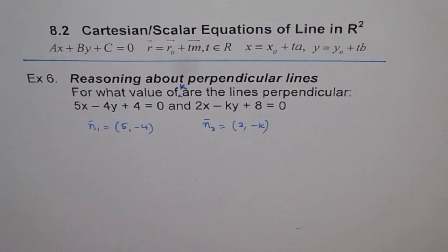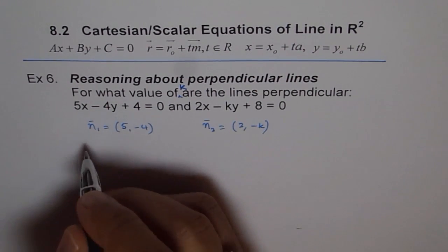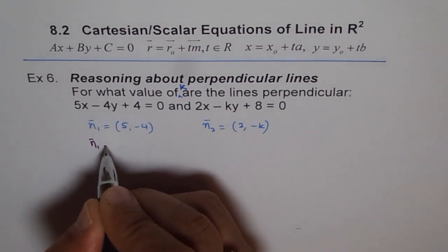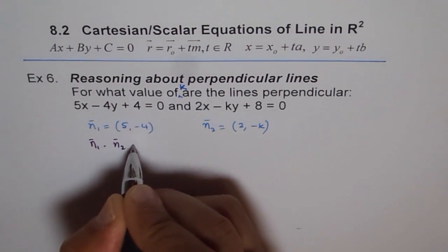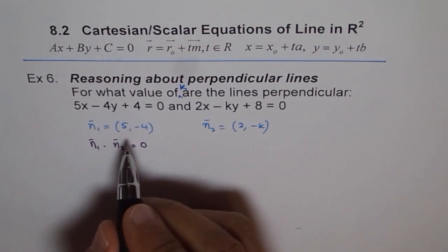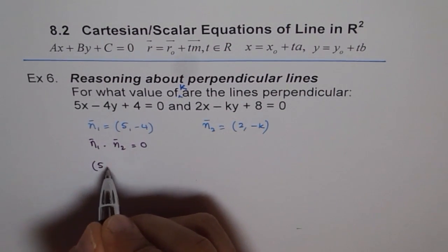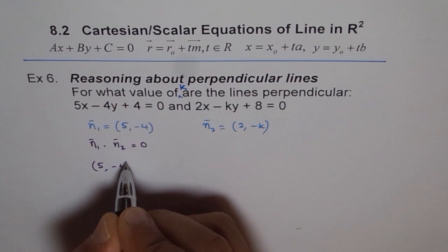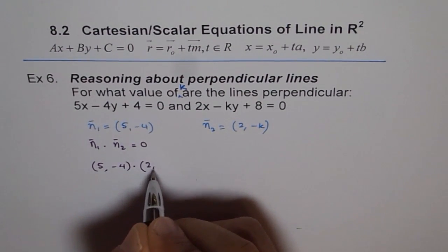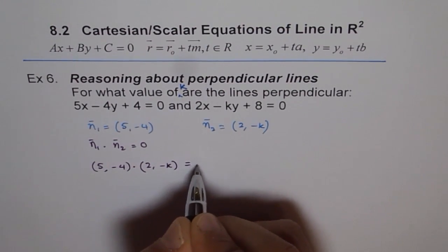Now, if these are the normals and if these two lines have to be perpendicular, then their dot product should be 0. That is how we are going to solve it. So we will do n1 dot n2 equals to 0. And that means 5 minus 4 dot 2 minus k equals to 0.